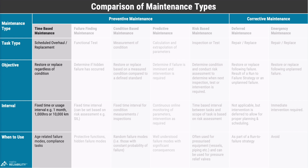When people talk about preventive maintenance, they're often actually referring to time-based maintenance. Time-based maintenance refers to replacing or renewing an item at a fixed time, interval, or usage — regardless of its condition. So every month, every 100 hours, or every 10,000 kilometers, you replace a part or service it with the expectation that you significantly increase its reliability. Time-based maintenance is only effective when dealing with failure modes that are clearly age-related, or for compliance or regulatory requirements where you have a time commitment.